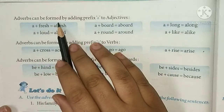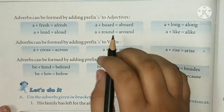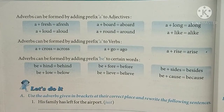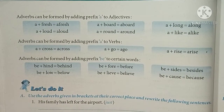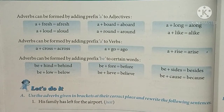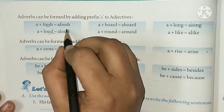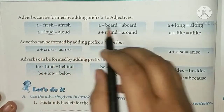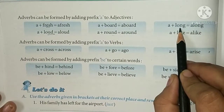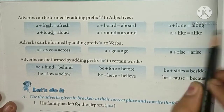Similarly, adverbs can be formed by adding prefix 'A' to adjectives. Examples: fresh → afresh, loud → aloud, bored → aboard, round → around, long → along, like → alike.